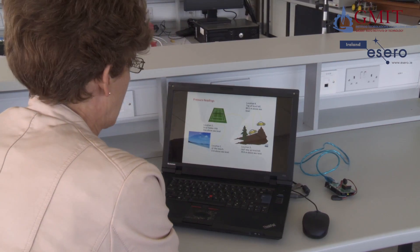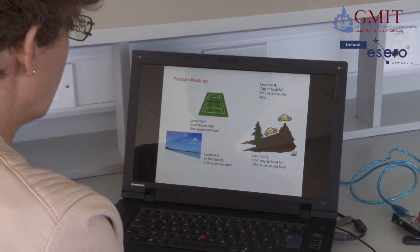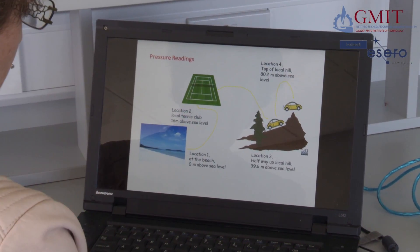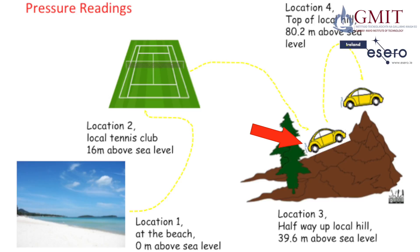For my experiment, I took the CANSAT and laptop to four different locations. The first was at the beach, zero meters above sea level. The second was at a local tennis club, 16 meters above sea level — from my phone app. The third was halfway up a local hill, nearly 40 meters above sea level. And the final location was 80 meters above sea level. I took readings and logged them to a data file at each location.